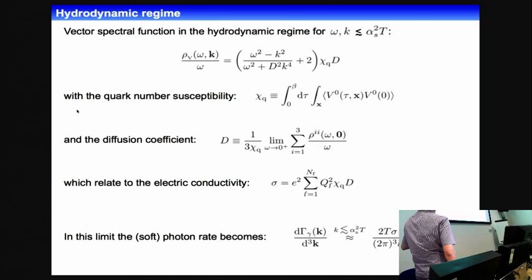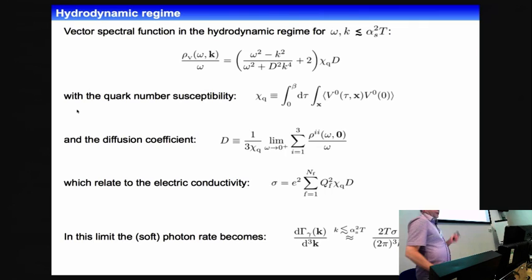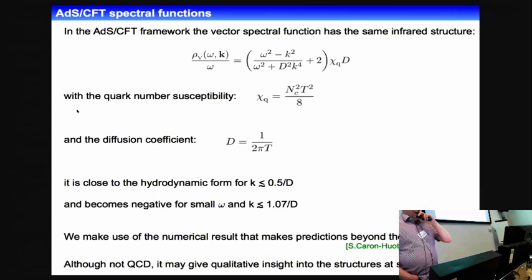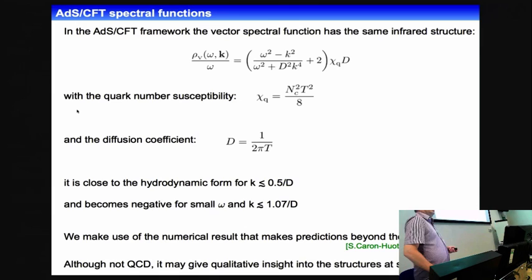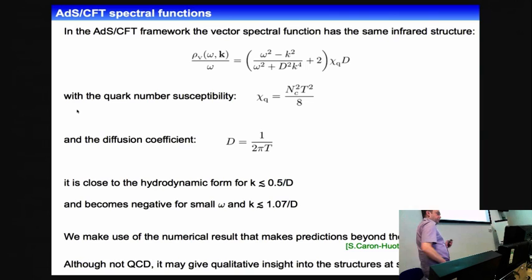The vector spectral function in the hydrodynamic regime involves the quark number susceptibility and the diffusion coefficient, which is also related to the electrical conductivity. If you have the electrical conductivity you can calculate the soft photon rate directly. Another useful framework is AdS/CFT, where you can also calculate the vector spectral function. At least in the limit of small omega and small k, it has the same structure as the hydrodynamic case, with the quark number susceptibility and the diffusion coefficient.